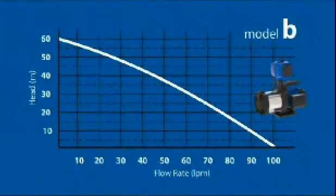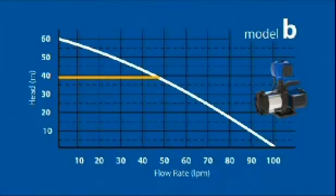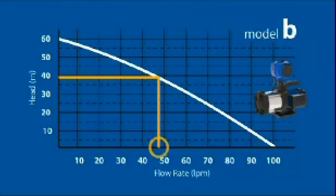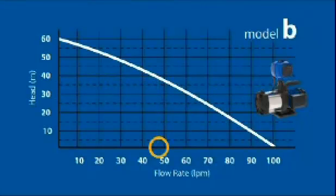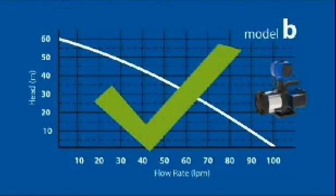Let's try the pump curve for model B. Again, find 39 metres on the head or vertical axis and run an imaginary line across the graph till you meet the pump curve. Then draw a line straight down to the flow rates. Is this pump able to produce the flow rate required at the pressure you require? In the case of model B, the answer is yes. This means model B has both the pressure and flow rate to meet Aunty Flo's needs.